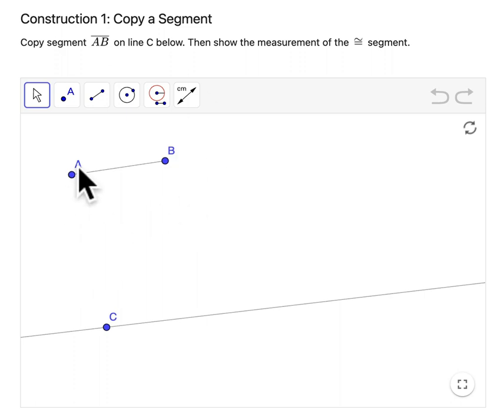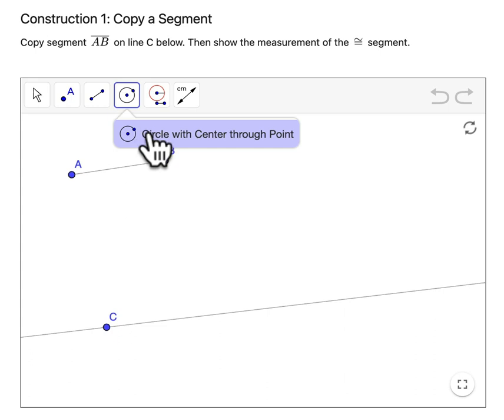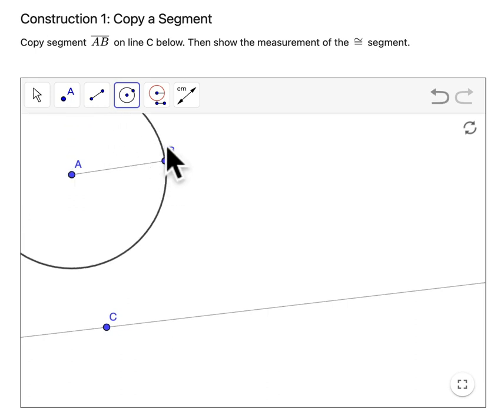GeoGebra has some really great tools to get the hang of how these constructions work. So the first thing we're going to do is select this tool right here, which is a circle with center through point. I'm going to basically take a compass and draw an arc here through B, centered at point A.